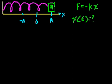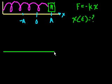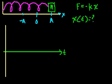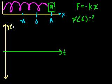Let me try to graph x as a function of time. Time is the independent variable, and I'll start at time equal to 0. This is the time axis. Let me draw the x-axis — this might be a little unusual, with x in the vertical, but that's because x is the dependent variable in this situation. We could say x of t, just so you know x is a function of time.